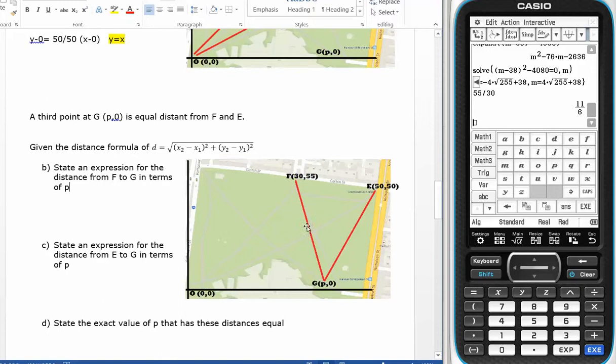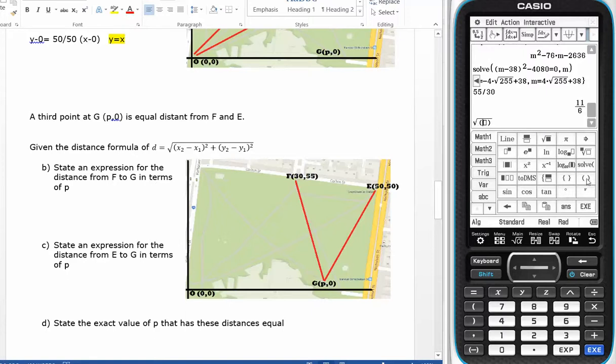So from F to G in terms of P, that's going to equal the square root of, in brackets, x2 minus x1. I'm going to call x2 P, minus x1 which is 30, and then that is squared.